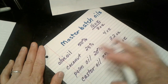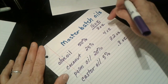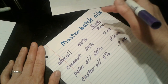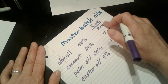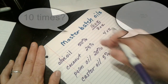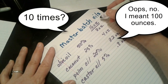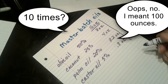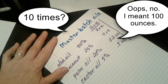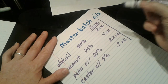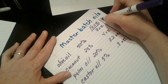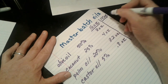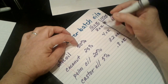So every time you need to make soap, you'd have to measure out these four ingredients in these four amounts. However, if you made 10 times this amount, you would take a large container — maybe a 5-gallon bucket like I use, or the clean Home Depot buckets. Let's say I wanted to have 100 ounces of my oils available to use.